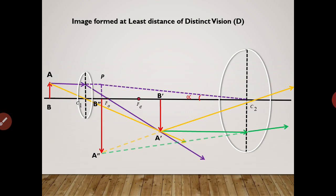We have the angle beta — the angle subtended by the final image at the eye. Alpha and beta have their own significance. The magnifying power of the compound microscope is given by the ratio of these two angles, that is beta upon alpha.